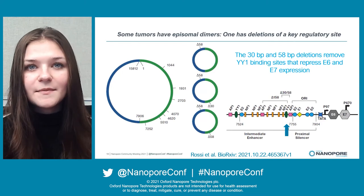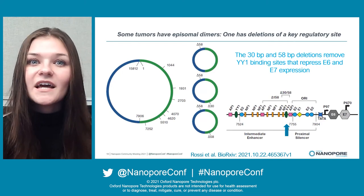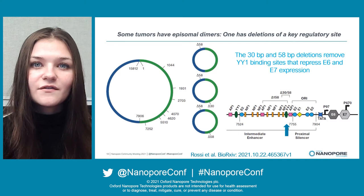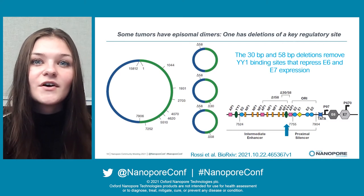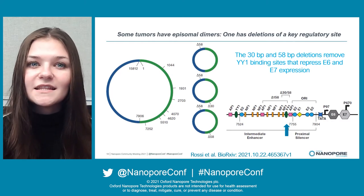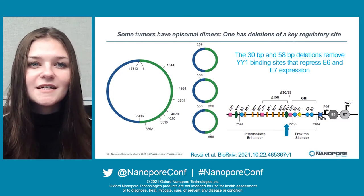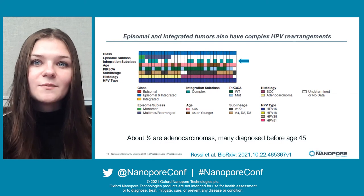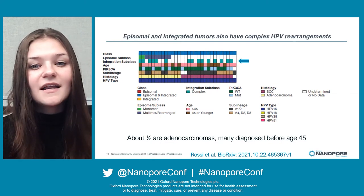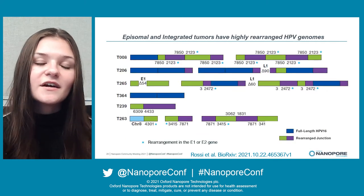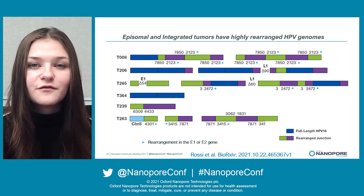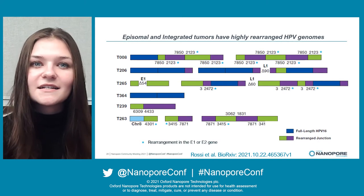Some multimer or rearranged epizomal-only tumors have epizomes that exist as a dimer. In one tumor, both HPV genomes in the dimer have a deletion in the upstream regulatory region, removing two binding sites for the YY1 transcription factor known to repress the p97 promoter. We think these deletions were selected for in epizome evolution to increase E6 and E7 expression in the absence of integration. Another subset of tumors with both epizomal and integrated HPV can have complex epizomes as well as complex integrations, with E1 and E2 genes frequently disrupted. Therefore, cervical tumors display multimer and rearranged epizomes, as well as complex integrations.